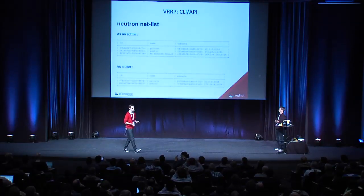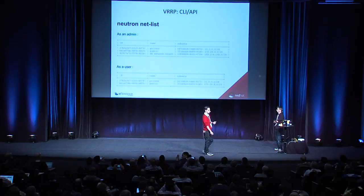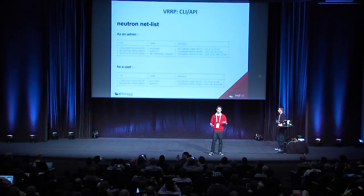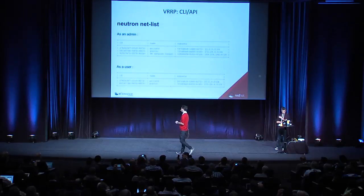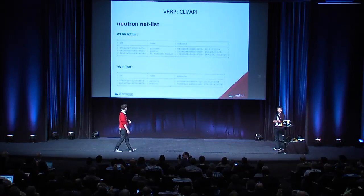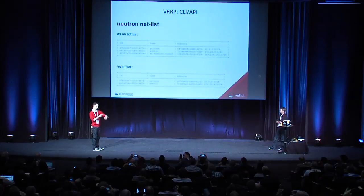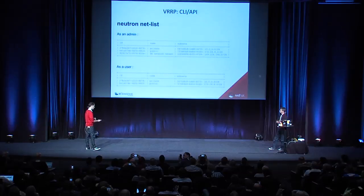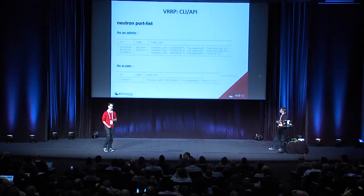Another interesting point: the HA network and HA ports within that network are hidden from tenants, as it's pretty much an implementation detail. From an admin's point of view, if you list networks, you can see all HA networks. From a tenant's point of view, you cannot. Same for the ports — HA ports are hidden from tenants.